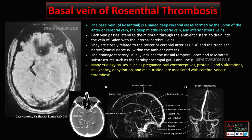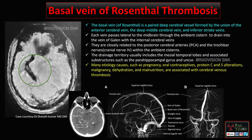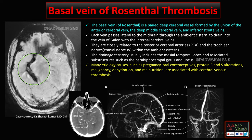Each vein passes lateral to the midbrain through the ambient cistern, where they are closely related to the posterior cerebral arteries and trochlear nerves. Drainage territories include the mesial temporal lobes and adjacent parahippocampal gyrus and uncus. Common etiological factors include pregnancy, oral contraceptives, protein C and protein S deficiency, malignancy, dehydration, and malnutrition. Whenever you see a linear serpiginous vein-like structure with blooming on GRE in the ambient cistern adjacent to the midbrain, definitely suspect deep cerebral vein thrombosis or basal vein of Rosenthal thrombosis.